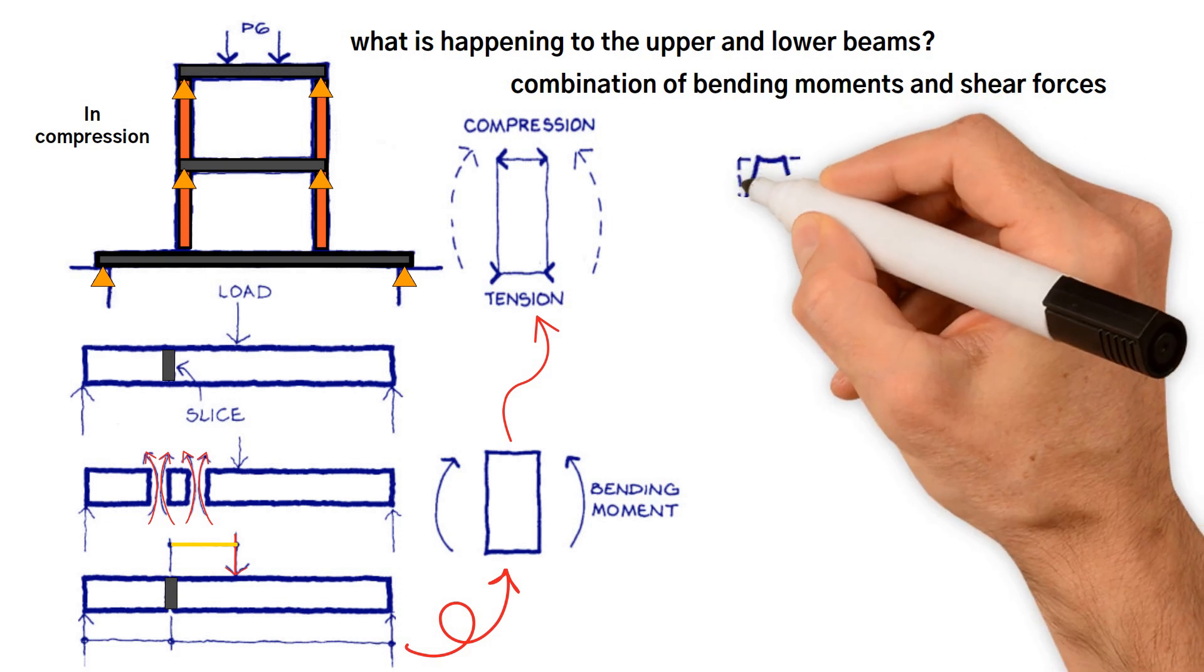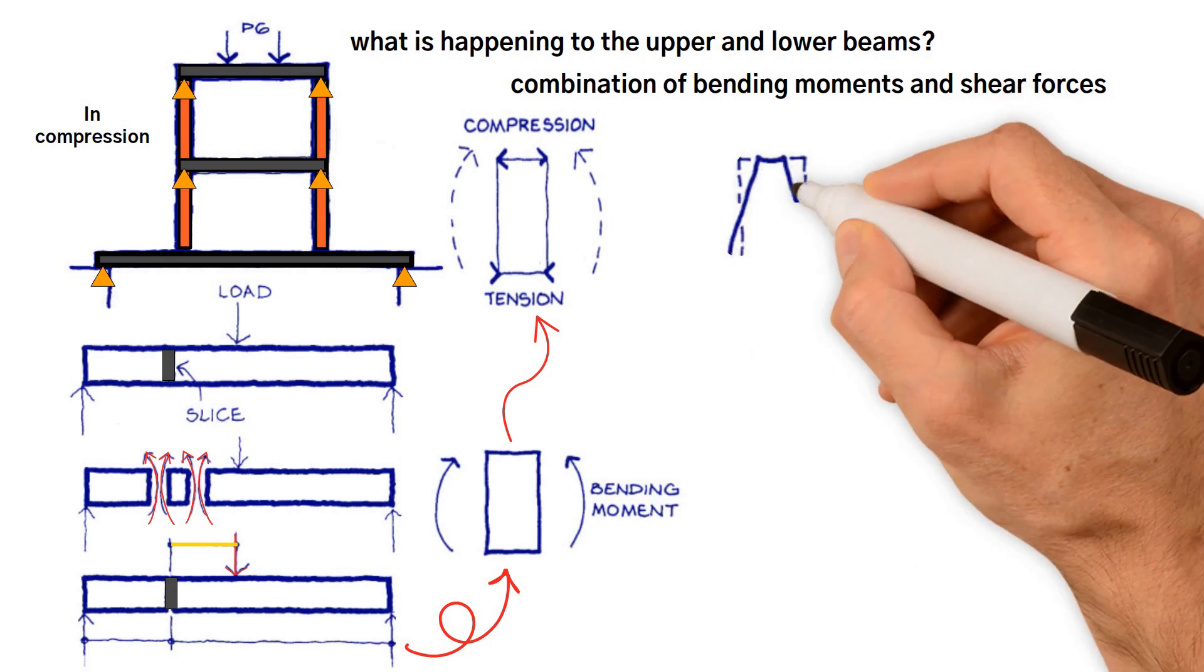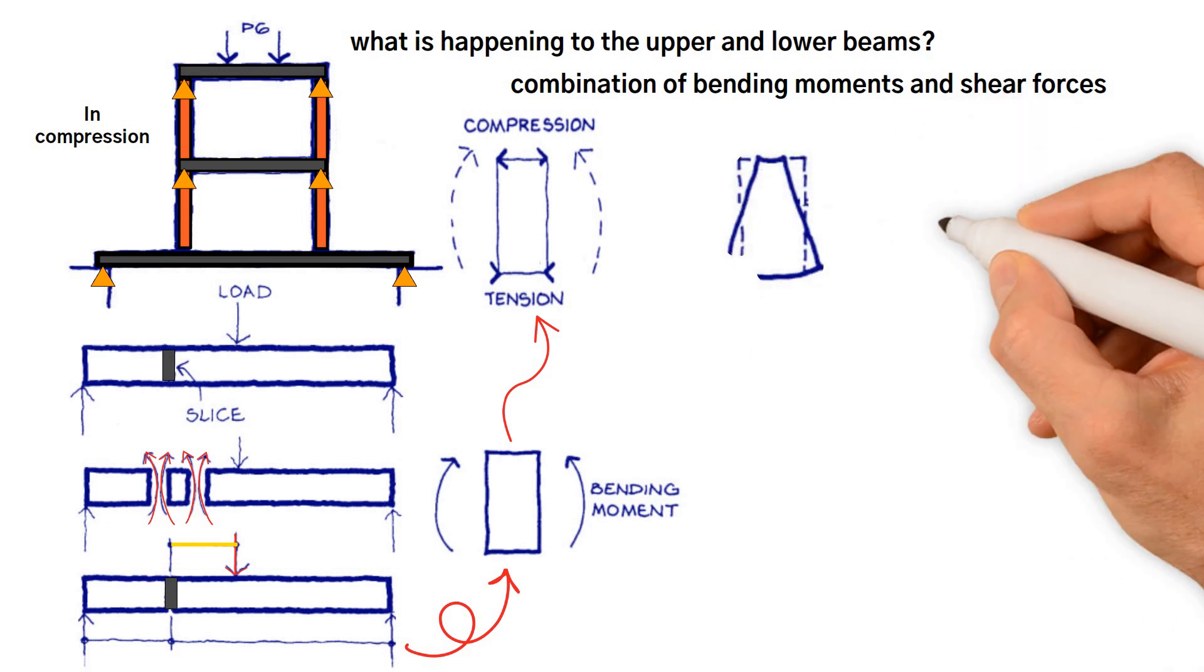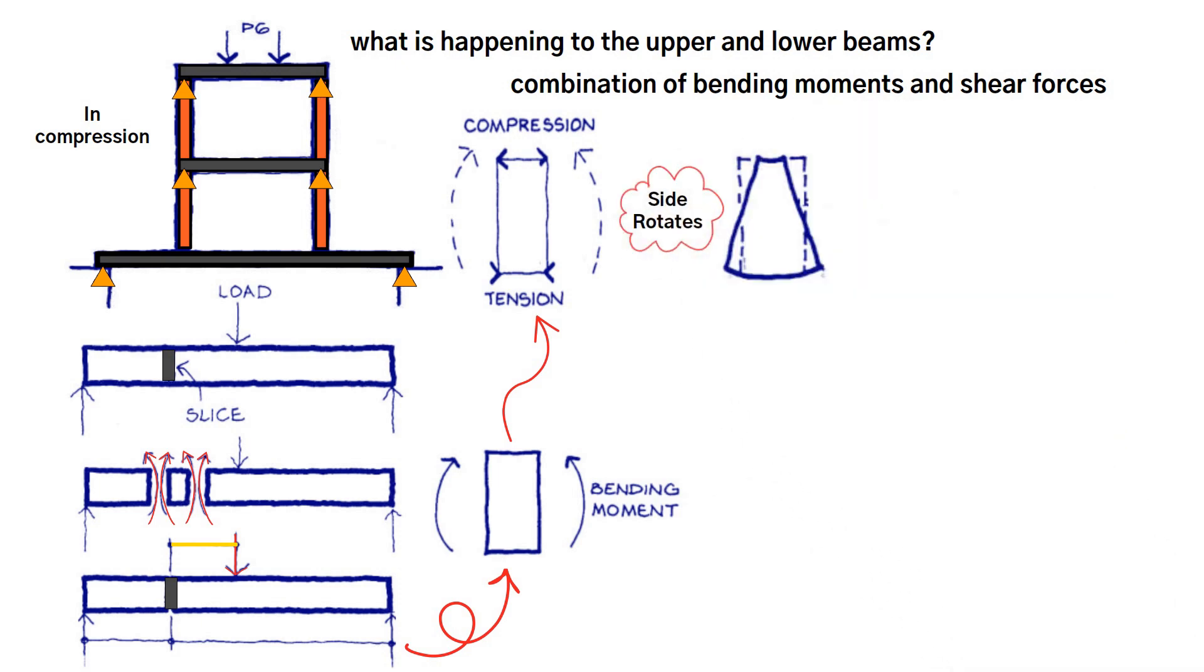Because the top is in compression, it shortens, and because the bottom is in tension, it lengthens. These effects cause the sides to rotate.